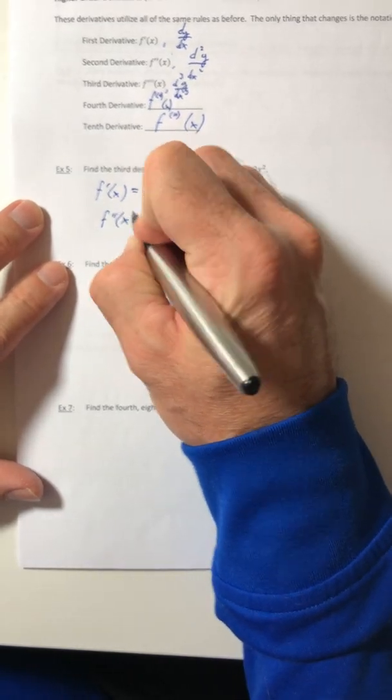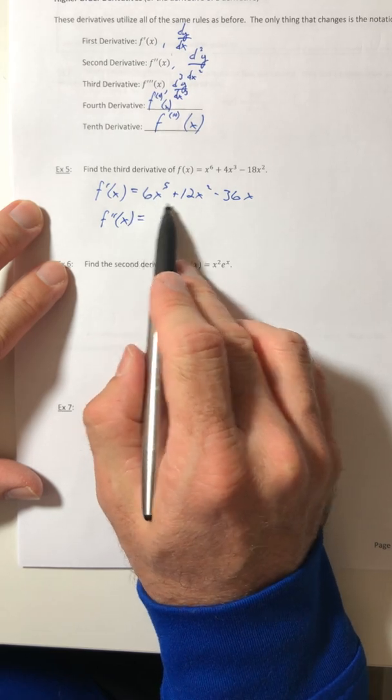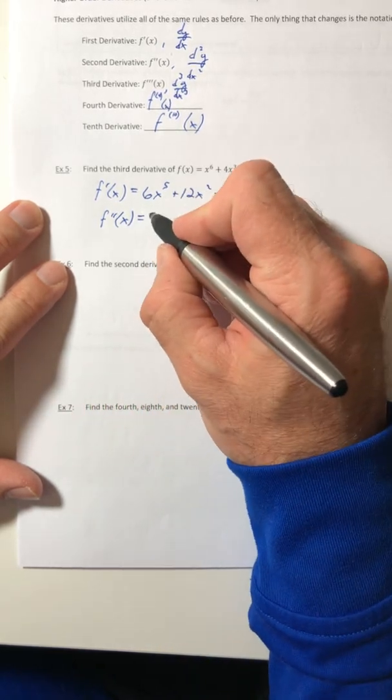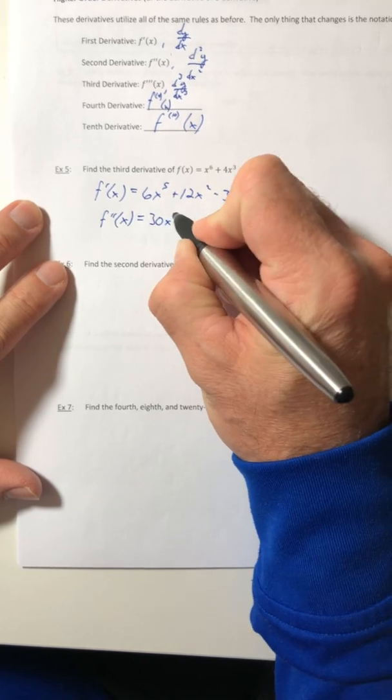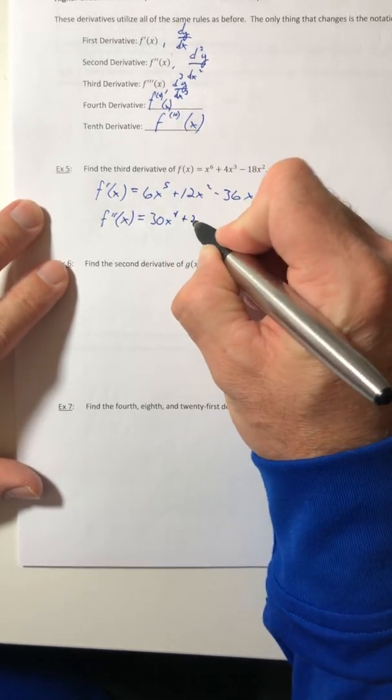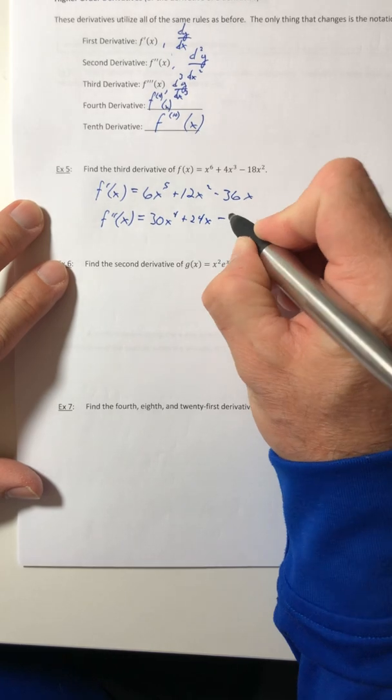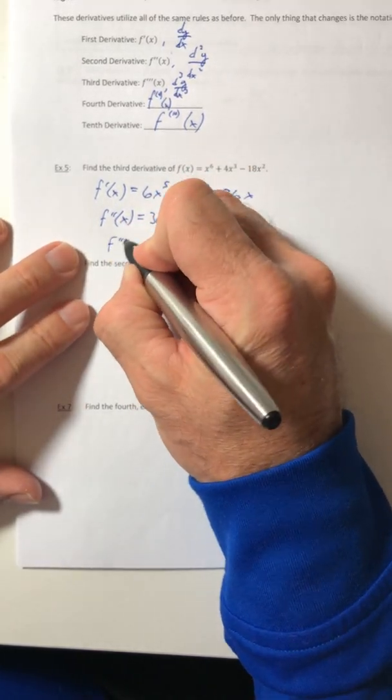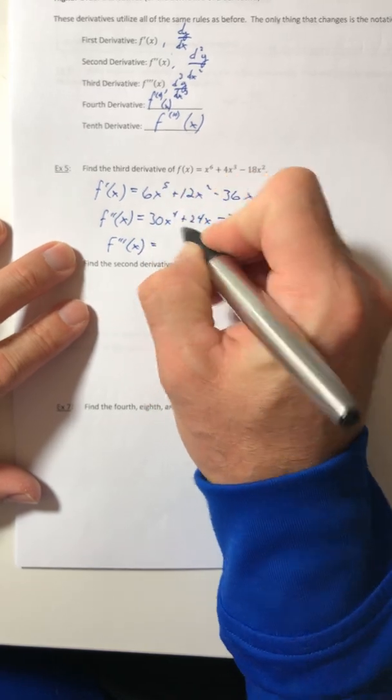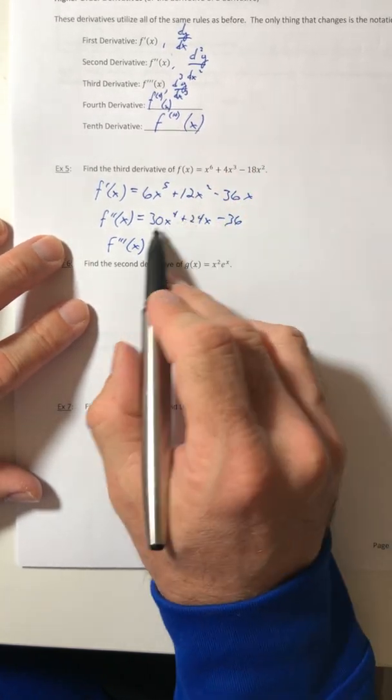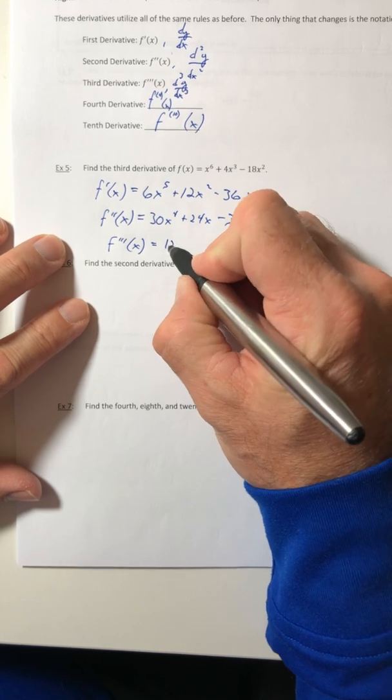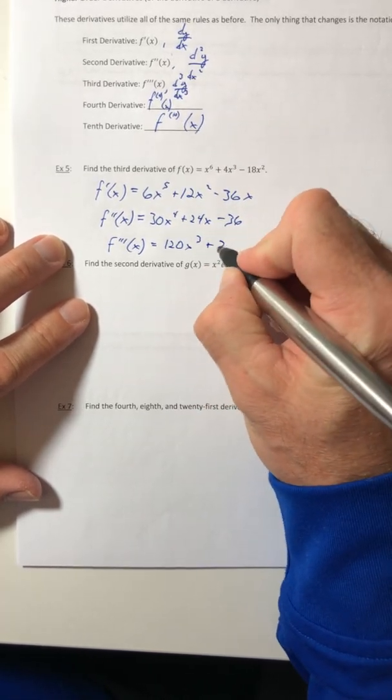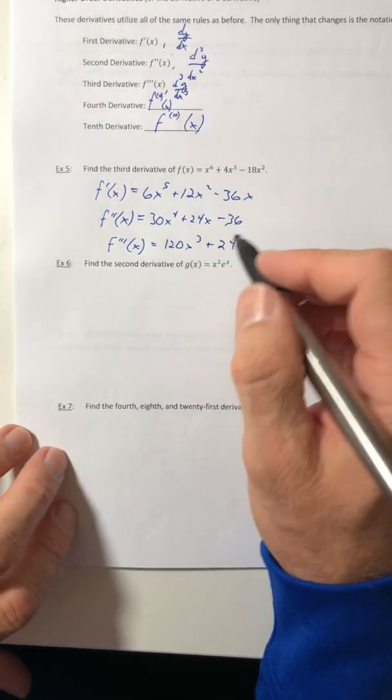So then the second derivative, I'm going to take the derivative of what I just wrote. So the derivative of this thing. So that would be 30x⁴ + 24x - 36. And then finally the third derivative. This is the derivative of the second. So 120x³ + 24x.